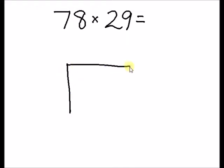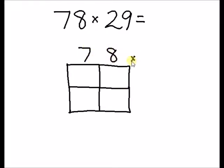It's time for you to try one. The equation is 78 times 29. Pause the video and draw your own lattice. Does your lattice have two squares times two squares? If it doesn't it's time to fix your lattice.